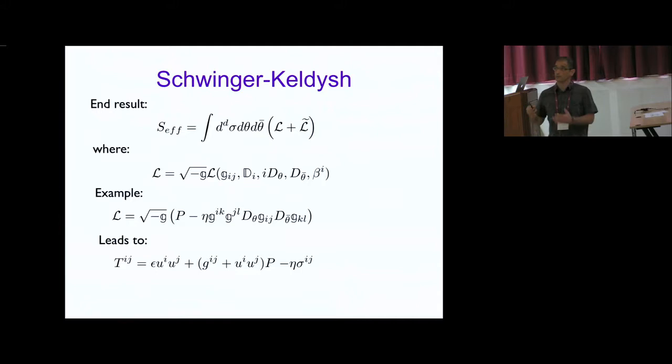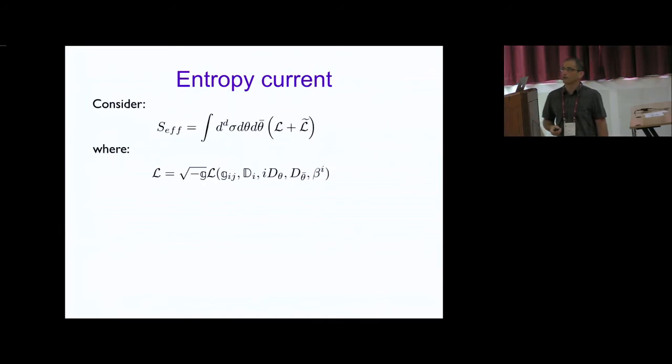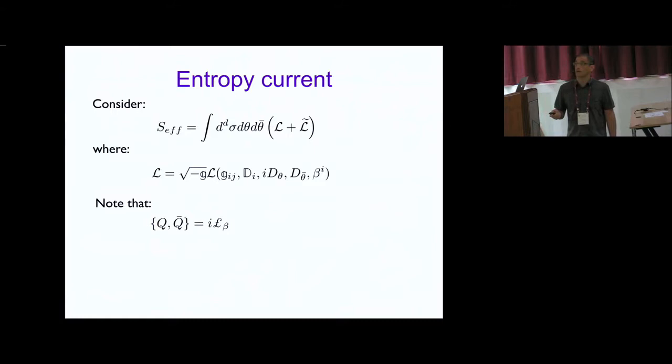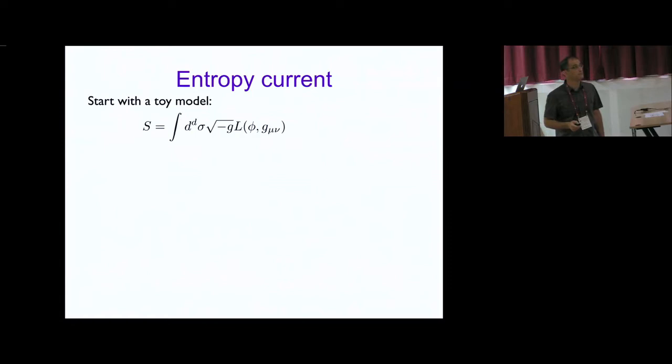Now let me talk about the entropy current. What I want to do is consider the anti-commutator of these nilpotent symmetries Q and Q-bar and look at a current associated with this Lie derivative. I'm going to start with a toy model.